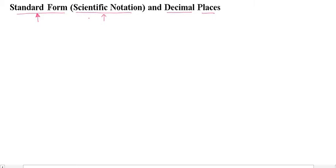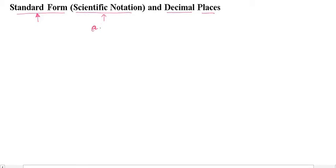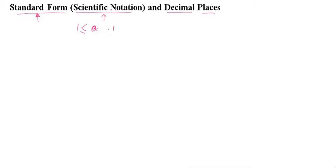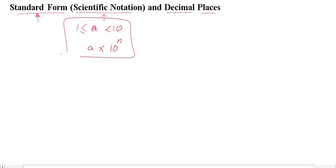Standard form is always written as a number between 1 and 10, multiplied by an appropriate power of 10. So any number 'a' must be between 1 and 10, and 'a' must be multiplied by 10 to the power n. Any number written in this way is called standard form.